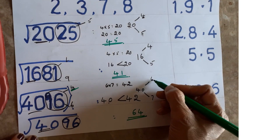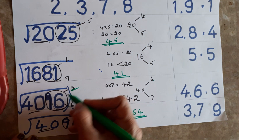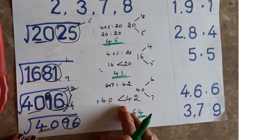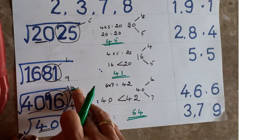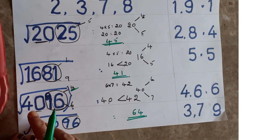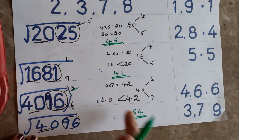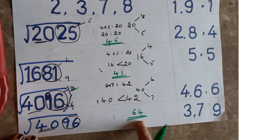Remember the rule: you always compare the remaining number with the product of the two surrounding square-root numbers. If the remaining number is less than that product, take the smaller (before) number. If it is greater, take the next (after) number. So 64 is the answer.